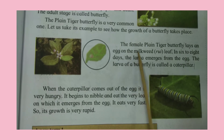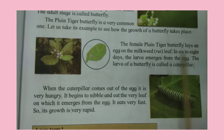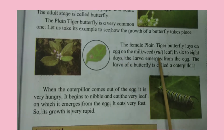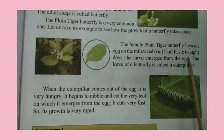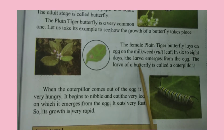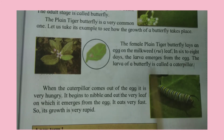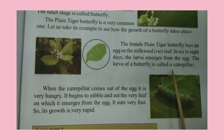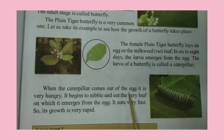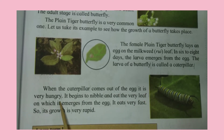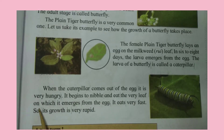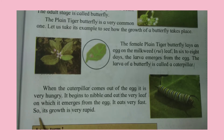The female Plain Tiger Butterfly lays an egg on the milkweed leaf. In six to eight days, the larva emerges from the egg. The larva of a butterfly is called a caterpillar. When the caterpillar comes out of the egg, it is very hungry. It begins to nibble and eat the very leaf on which it emerges from the egg. It eats very fast, so its growth is very rapid.